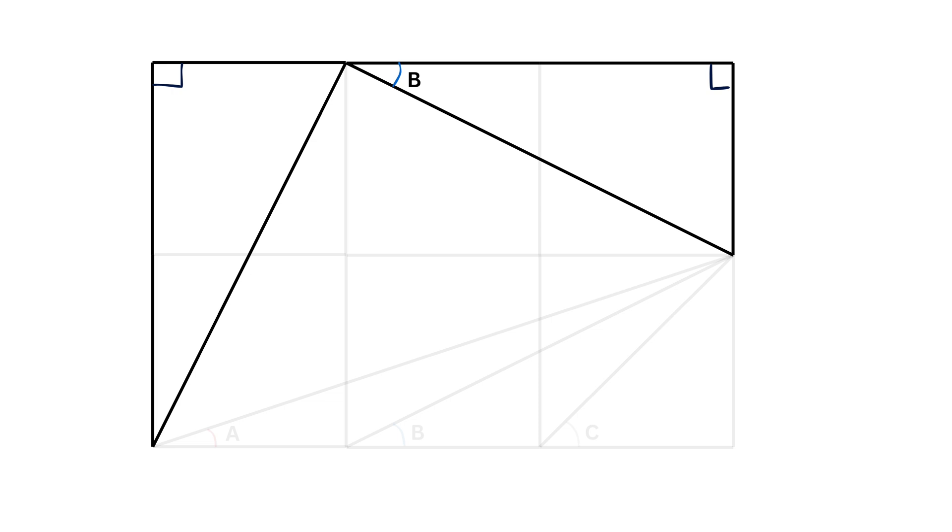Therefore we can say that they are also congruent triangles. Now this angle B is opposite to the base one, and thus this angle which is opposite to this base will also be equal to B.